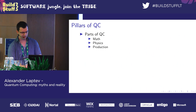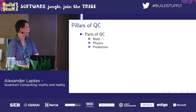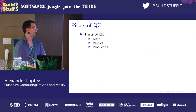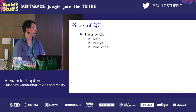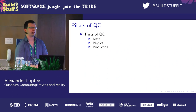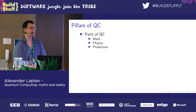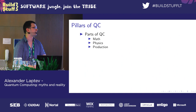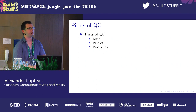Quantum computing consists of three main areas. The first is math, which is split into two parts. The first part covers algorithms over number theory, cryptography, security, randomness, and similar topics — usually done by scientists at MIT, Stanford, and similar universities. The other part is the math minimum required for a standard quantum engineer: a bit of complex numbers and matrix multiplication.